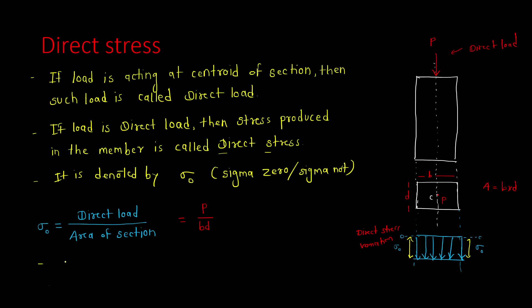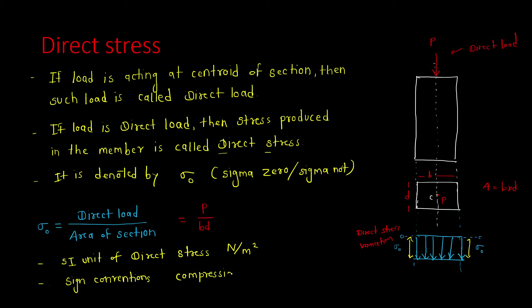The SI unit of direct stress is Newton per meter square. Now for sign conventions: we will take compression as positive and tension as negative.